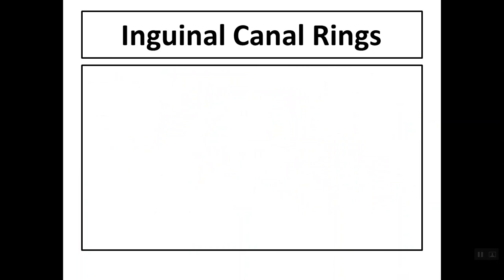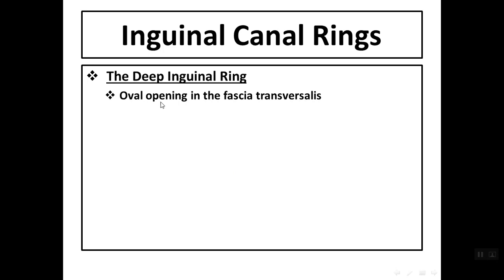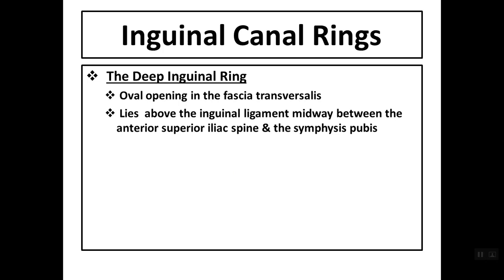The inguinal canal rings are regarded as weak points. The deep inguinal ring is an oval opening in the fascia transversalis. It lies above the inguinal ligament, midway between the anterior superior iliac spine and the symphysis pubis — that is what we call the mid-inguinal point.